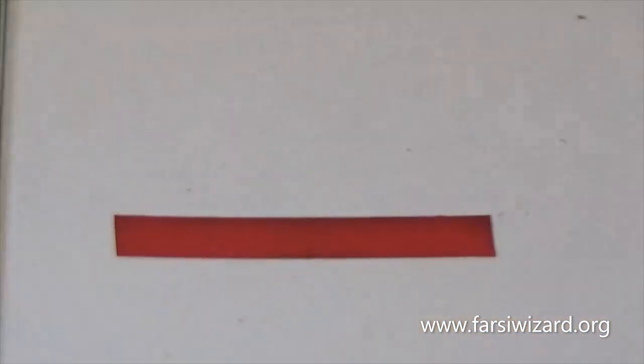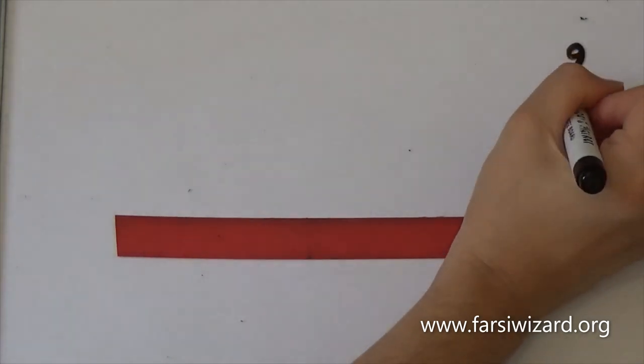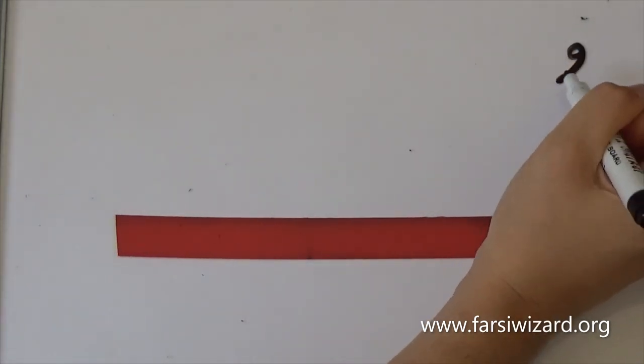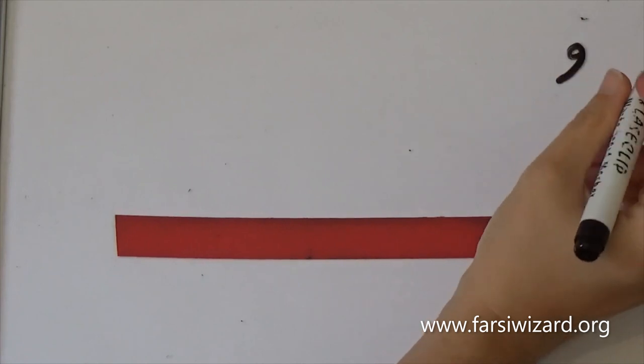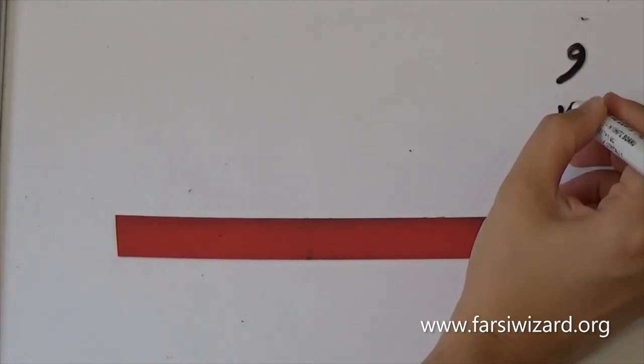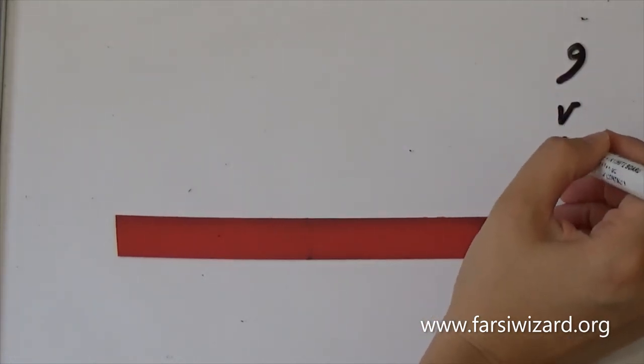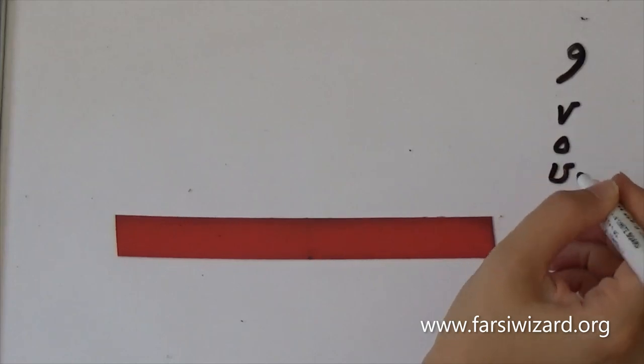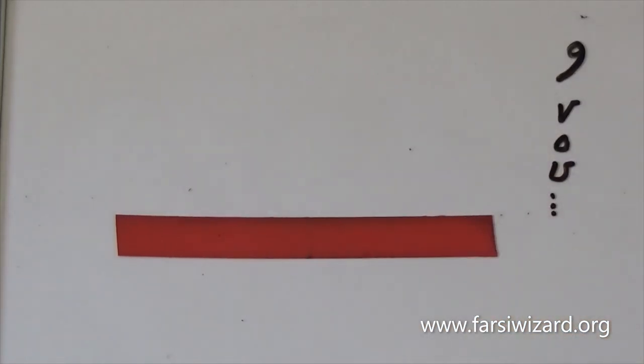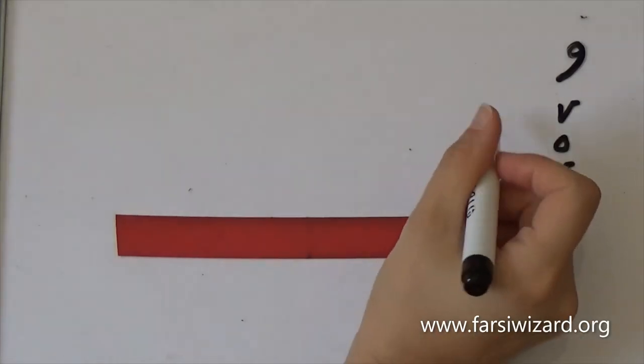Now we're going to look at the second letter which is vav. As we talked about it is the equivalent of V, U, O and couple of other things and we're going to see how exactly it functions in different words. This one is a little tricky so be patient with yourself because it will appear in different words and in each case it may have a different sound.